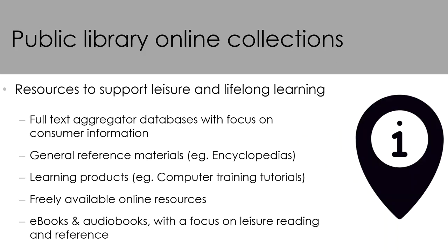In the public library, the context of the collection is a little different. Public libraries tend to focus on supporting the leisure and lifelong learning needs of their users. For this reason, the public library online collection tends to include full text aggregated databases, with consumer information as the focus. It is unlikely that a user will be satisfied with an abstracting or indexing database because they may not have the capacity to connect abstracts to the full text. Public libraries will also purchase access to online general reference materials such as encyclopedias and dictionaries, as well as subscriptions to learning products like computer training tutorials, and link to freely available online resources such as the Australian Bureau of Statistics or legislation databases.